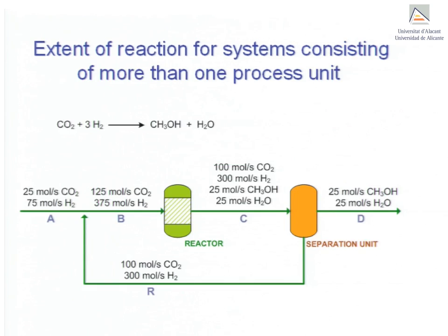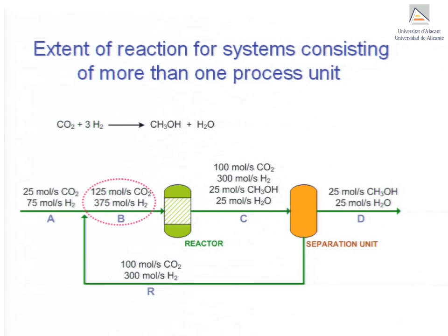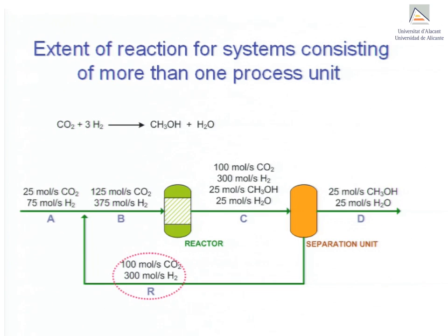We now deal with writing mass balances for systems consisting of several units using the concept of extent of reaction, applied to the example shown. Carbon dioxide and hydrogen are the fresh feed, stream A. This stream is combined with the recycle stream R, and the resulting stream B is fed to the reactor. The reactor produces methanol and water but, as can be seen, not all the reactants are consumed, so some will remain left over. This is the reason for placing a separation unit after the reactor. The separation unit splits the stream into stream D containing methanol and water, and stream R containing the leftover reactants, carbon dioxide and hydrogen, which are fed back to the reactor.